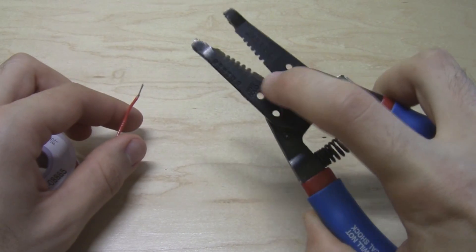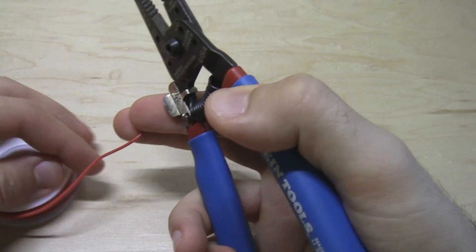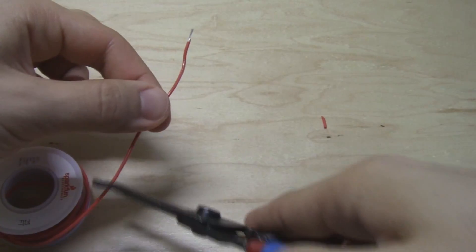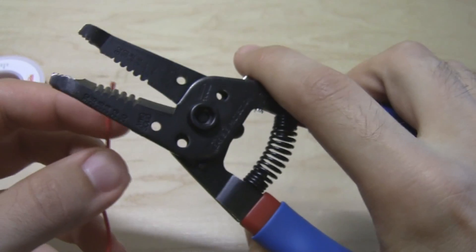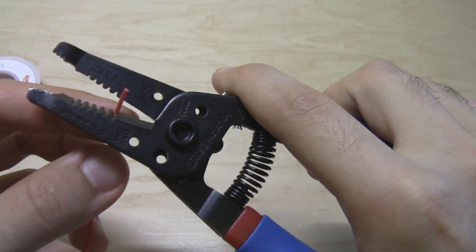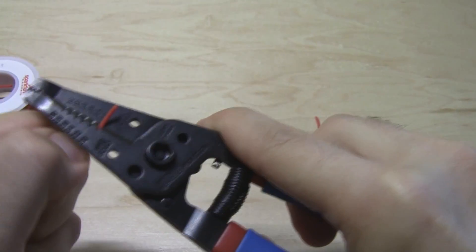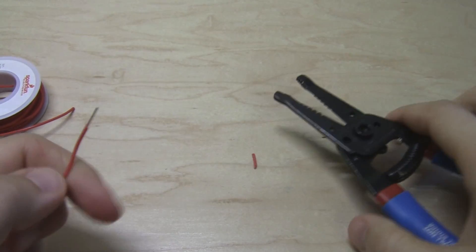Now these wire strippers also have a cutting surface that works just like scissors. So I can come along here, cut the wire to the length I need, and then just do the same thing. Come in, get the wire lined up in the right hole, give it a gentle tug, and the insulation pops right off.